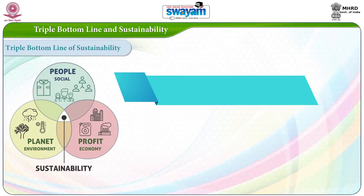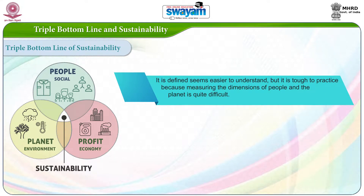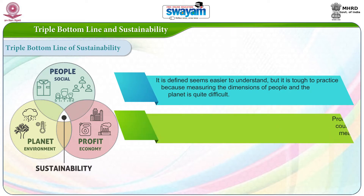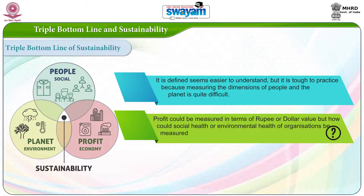The concept of TBL as defined seems easier to understand but it is tough to practice, because measuring the dimensions of people and the planet is quite difficult. Profit could be measured in terms of rupee or dollar value, but how could social health or environmental health of organizations be measured? The Global Reporting Initiative, GRI, has developed guidelines to enable businesses to report and measure their social, environment, and economic impact.